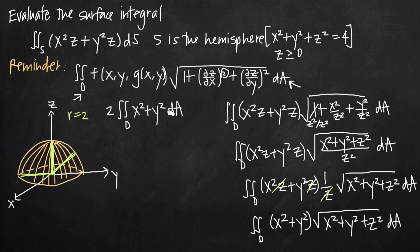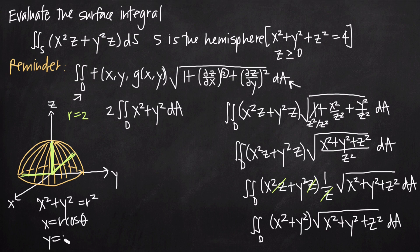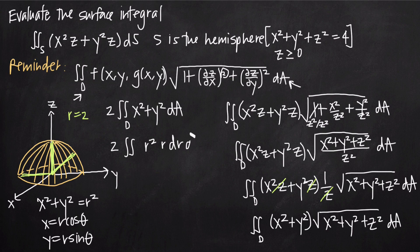Using the polar coordinate conversions — x squared plus y squared equals r squared, x equals r cosine theta, and y equals r sine theta — we substitute r squared for x squared plus y squared, and convert dA to r dr d theta. This gives us 2 times the double integral of r squared times r dr d theta, which we can write as r cubed. Our integral is now entirely in terms of r and theta.